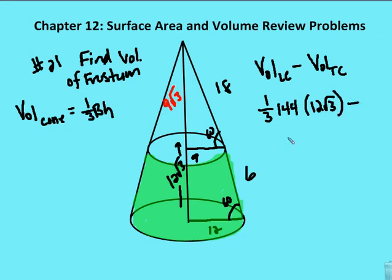And then we're going to subtract one-third of 9 as a radius, so pi r squared will be 81 pi, times 9 root 3.